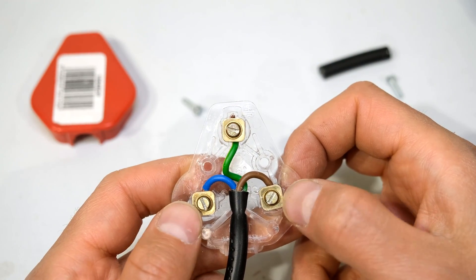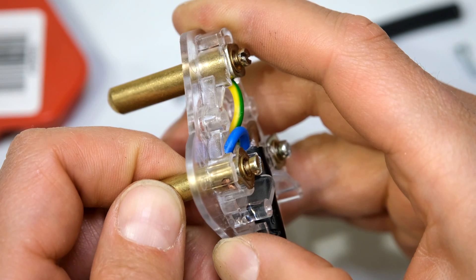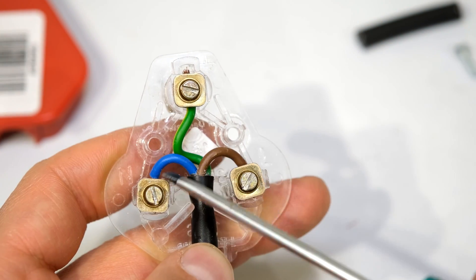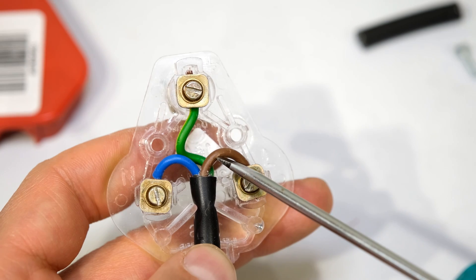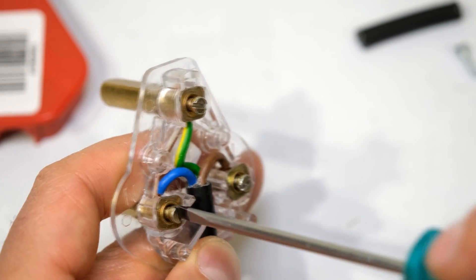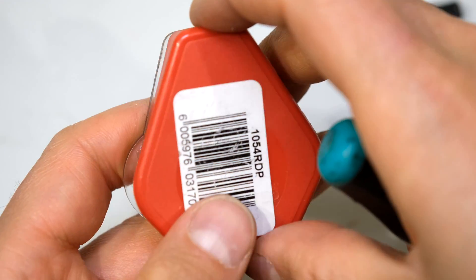Just before you close it, make sure these prongs are seated correctly. For example, that is not seated correctly, but now it is seated correctly. Make sure none of these wires are sitting on the screw post or they'll get crushed when you put the plug top on. Do a last check, make sure everything is tight. And now put your plug top on.